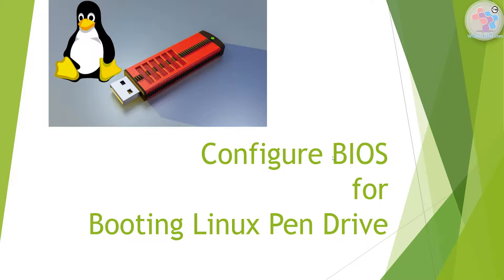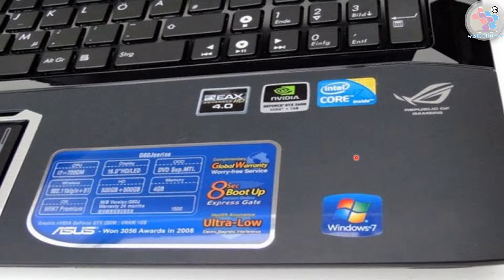The issue of booting your Linux installation medium occurs only on some systems which are pre-installed with Windows and have the Windows sticker, like you can see in this example. This particular laptop has got the Windows sticker. Microsoft has kind of locked the system so that any non-Microsoft operating system cannot be installed directly unless the system settings are changed. In this video we will see how to make those changes so that you can install your favorite Linux distro.